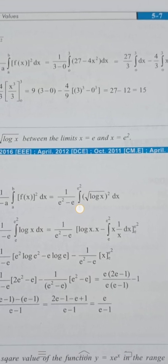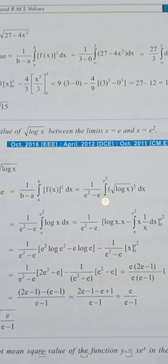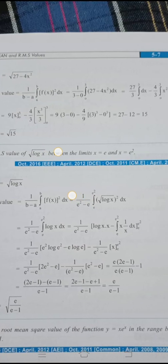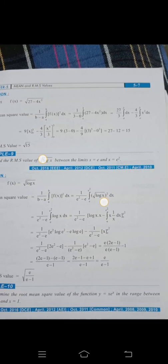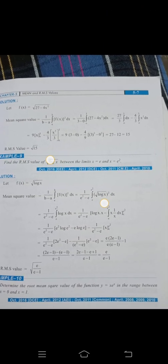Evaluating at the limits: 27 − 12 = 15. So the mean square value is 15. For the RMS value, take the square root: RMS = √15. That's the answer to Question 1. For Question 2: Find the RMS value of √(log x) between the limits x = e and x = e².